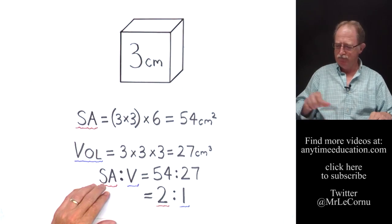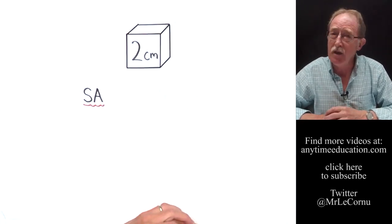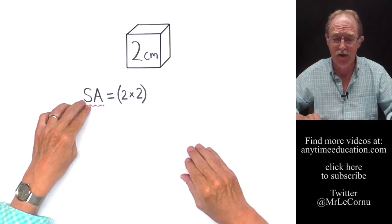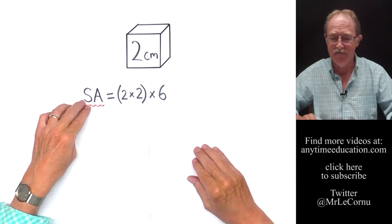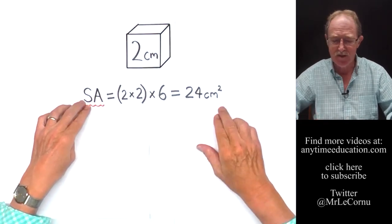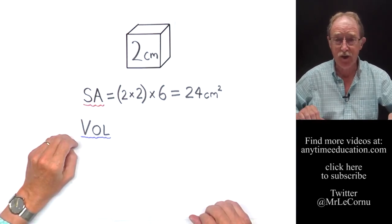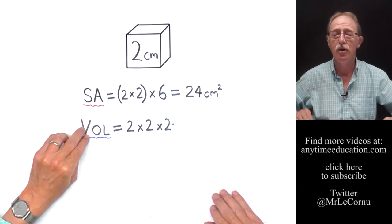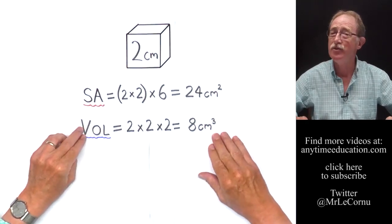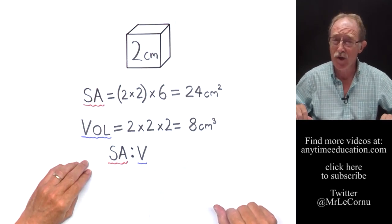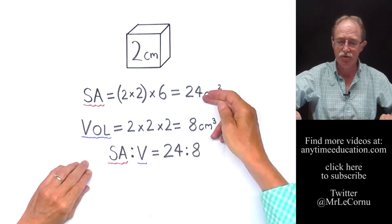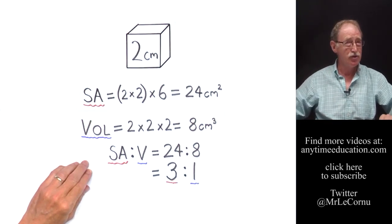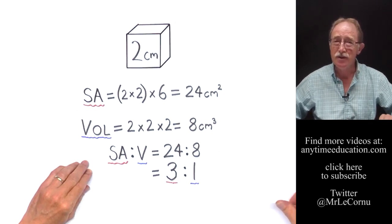Now let's do the same calculation for our two centimeter cube. Each surface is two by two, which is four centimeters squared. There are six sides, so four times six is 24 centimeters squared. The volume is two by two by two, which is eight centimeters cubed. So the surface area to volume ratio for this two centimeter cube is 24 to 8, which cancels down to three to one — larger than the three centimeter cube's ratio of two to one.